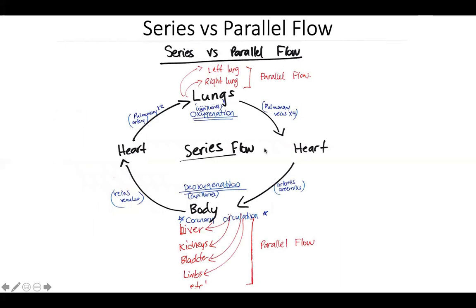To revisit this — something students often find confusing — the general cardiovascular circulation is considered series because when blood leaves the lungs, all of it must go back to the left side of the heart via the pulmonary veins. From the left side of the heart, all of it must go out to the body via the arteries. From the entire body, all of it must return to the right atrium via the veins. All of it must then go back to the lungs. This is series because all of the blood must take all four steps: lungs, to the heart, to the body, back to the heart, to the lungs.